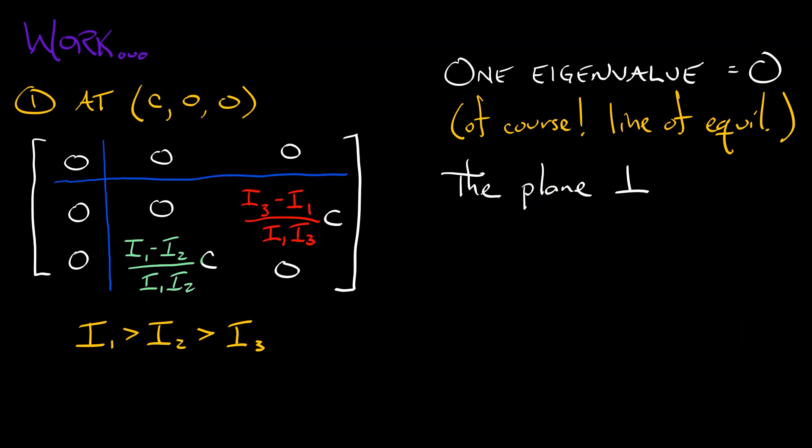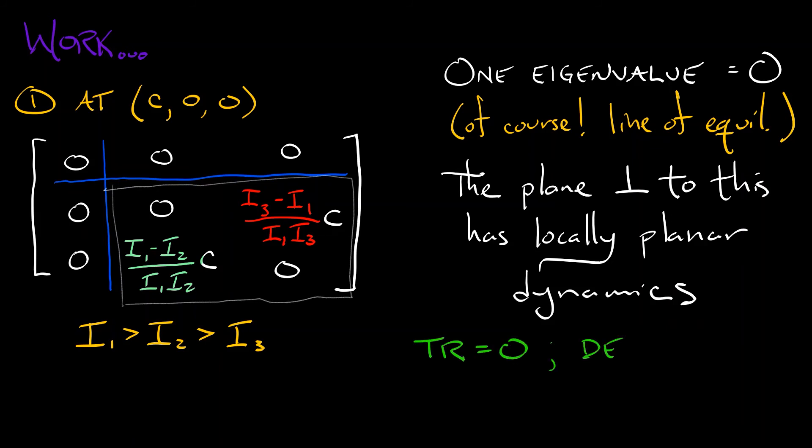But the plane that is perpendicular to this, parallel to the yz plane, that has locally planar dynamics that is governed by that second block, that two-by-two block. And in that two-by-two block, what do we see? Well, we've got trace zero, determinant positive. That means we have a center in this two-dimensional plane.